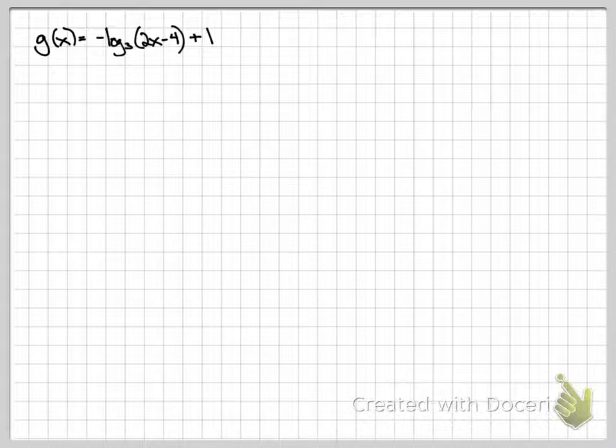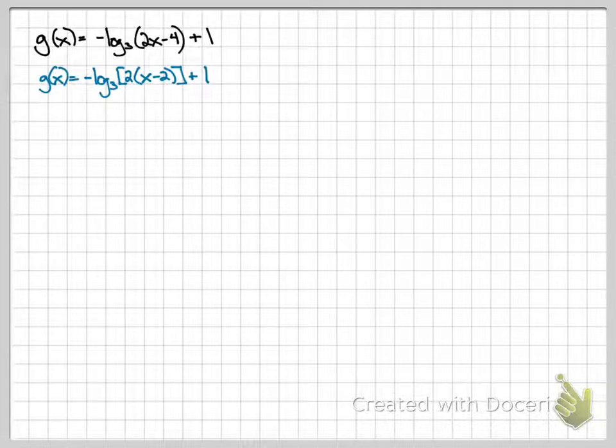First, this is not in graphing form yet. So take a minute and put this in graphing form. You should be able to do this now. Pause the video and put yours in graphing form and then compare with mine. Okay, check your graphing form. You need to factor out the 2. Now look and see what base of a log problem you're dealing with. This is a base 3. So write the coordinates for the original function, log base 3 of x, and then we're going to transform it.